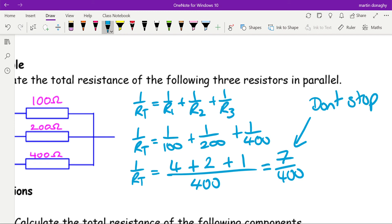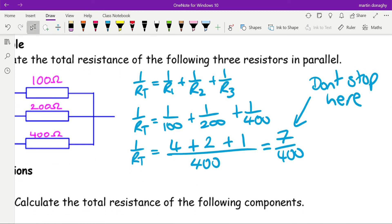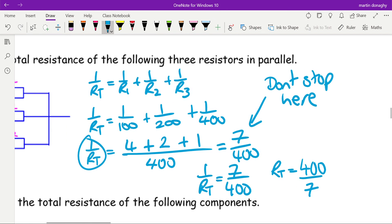Don't stop here. Too many people then think the total resistance is 7 over 400, but it's not. If you notice, 1 over the total resistance equals 7 over 400. So what we have to do is turn both those fractions upside down, which gives us R_T over 1, which is just R_T, is 400 divided by 7.